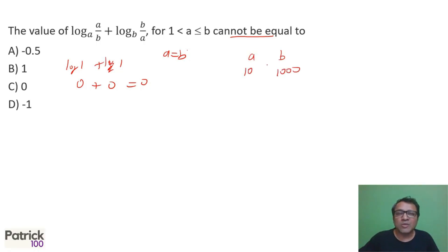Let's say 10 and 1000. 10 because normally we take log 10. So I'm taking 10 and 1000. So if I substitute that log to the base 10, 10 upon 1000. You can take any other value also. Log to the base 10, 1000 upon 10. So this becomes log to the base 10, 1 upon 100 or 10 raised to minus 2 plus log of base 1000, 100.